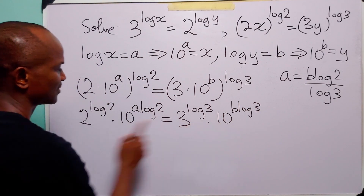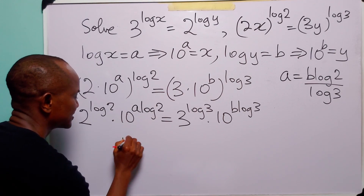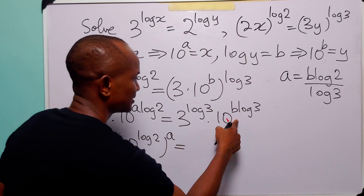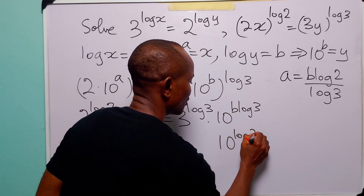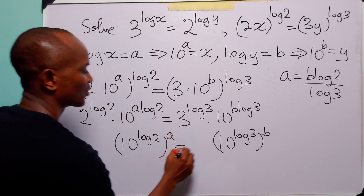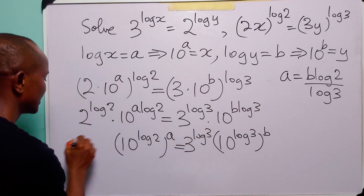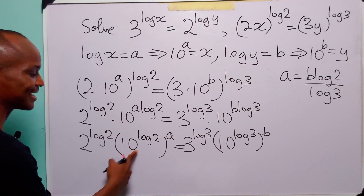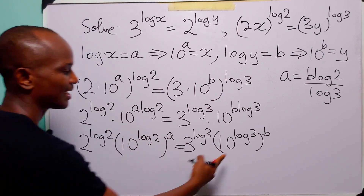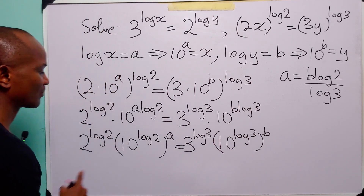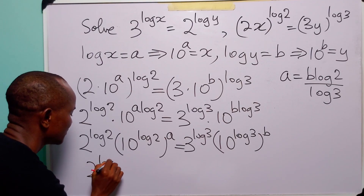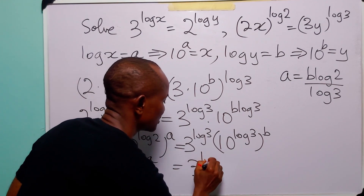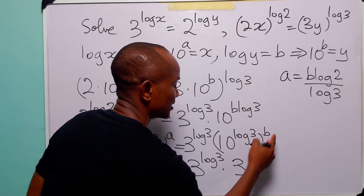Now we can rewrite 10 to the power a·log 2 as 10 to the power log 2 to the power a, and similarly for the other term. You know that 10 to the power log 2 is simply equal to 2, and 10 to the power log 3 is simply equal to 3. So the equation becomes 2 to the power log 2, multiplied by 2 to the power a, is equal to 3 to the power log 3, multiplied by 3 to the power b.